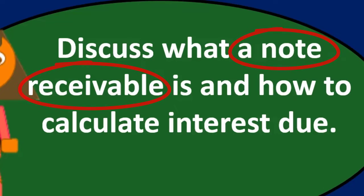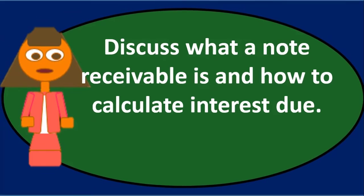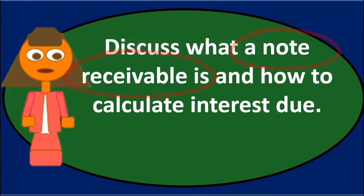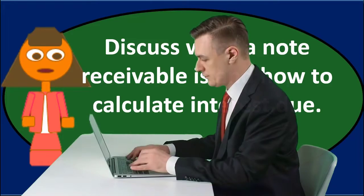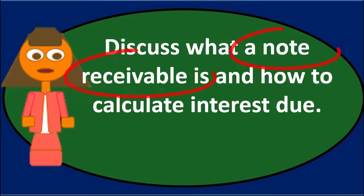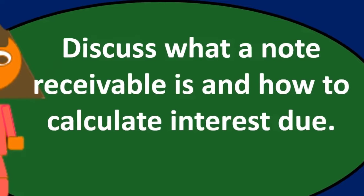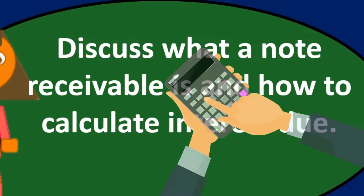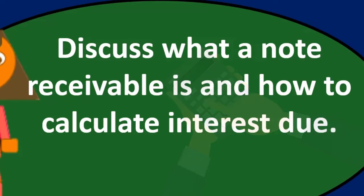The notes receivable we're not going to track in that same subsidiary ledger. We may track in a couple different ways. We might have a different note receivable for each note on the trial balance and track the principal on the trial balance, or we could have one note receivable on the trial balance and then have supporting documentation that will track who owes us money on the note receivable and calculating the interest on that note.